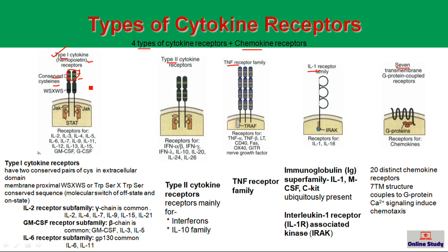The membrane proximal domain has a special sequence called the WSXWS motif, or the WS motif, which stands for tryptophan-serine, any amino acid residue, and tryptophan-serine. This conserved sequence is only found in the Type 1 cytokine receptor, and this specific sequence helps in the molecular switching between the off state and the on state when the cytokine binds to its receptor.